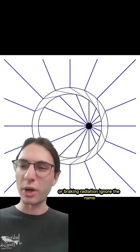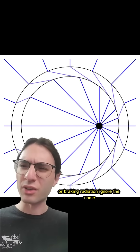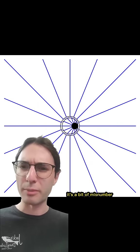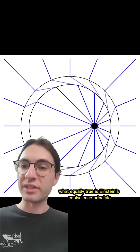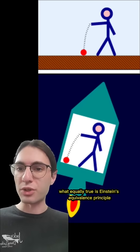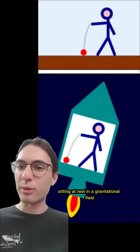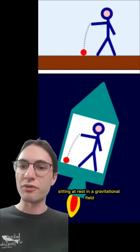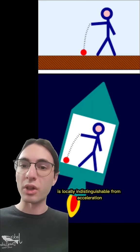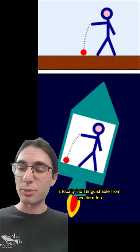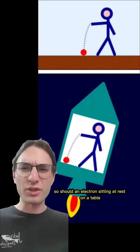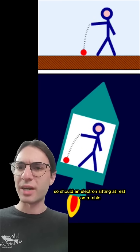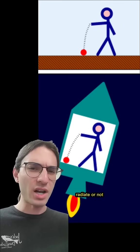This is called bremsstrahlung, or braking radiation — ignore the name, it's a bit of a misnomer. But equally true is Einstein's equivalence principle, which implies that sitting at rest in a gravitational field is, locally, indistinguishable from acceleration. So should an electron sitting at rest on a table radiate or not?